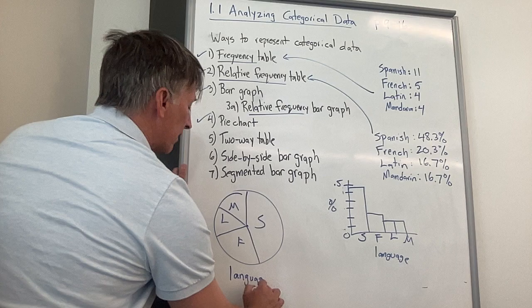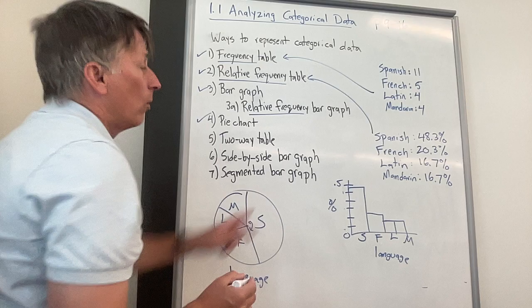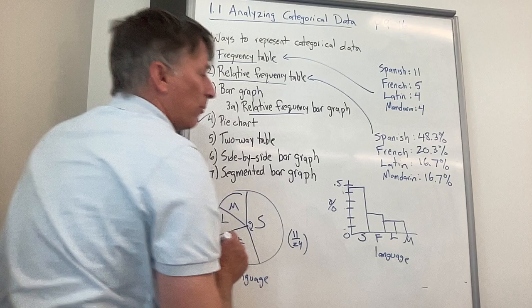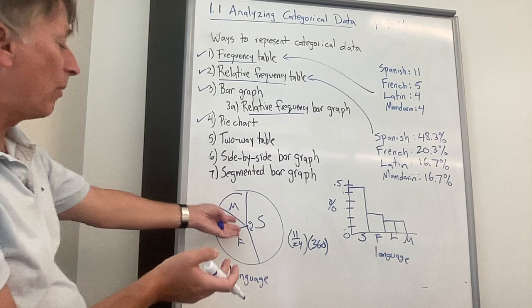I'll just label this as language. Really, it's language taken by the 24 students in the class. So that's a pie chart. I glossed over, I just eyeballed it. But of course, in the real world, how would you figure out how many degrees this is? You would go, okay, Spanish is 11 24ths, which is 48.3% times the number of degrees, which is 360. And that would tell you exactly how many degrees it would be. And you'd do the math otherwise for that.